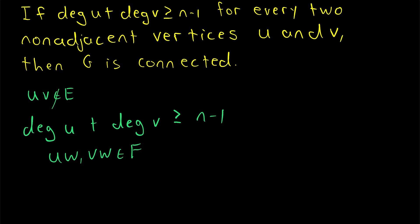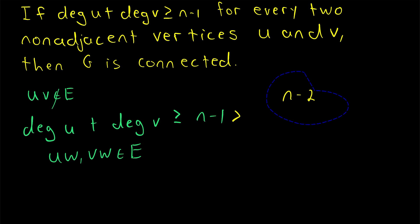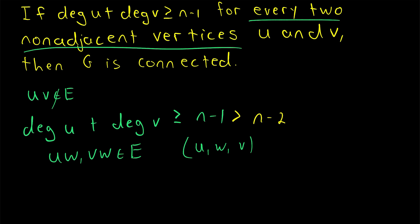This directly implies that u and v must both be adjacent to some common vertex we'll call w, so uw and vw are elements of the edge set. We know this because u and v aren't adjacent to each other, and they can't be adjacent to themselves, which only leaves n minus 2 other vertices. Since in total they're adjacent to at least n minus 1 vertices — greater than n minus 2 — they must have at least one common neighbor w. Thus, there is a path from u to w to v, and so the graph is connected. We've proven that if every two non-adjacent vertices have a degree sum of at least n minus 1, then the graph is connected.